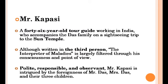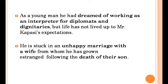Polite, responsible and observant, Mr. Kapasi is intrigued or attracted by the foreignness of Mr. Das, Mrs. Das and their three children. As a young man, he had dreamed of working as an interpreter or translator for diplomats and dignitaries, but life has not lived up to Mr. Kapasi's expectations. Instead, in middle age, he finds himself escorting tourists and working a second job as an interpreter of maladies in a doctor's office to support his family.